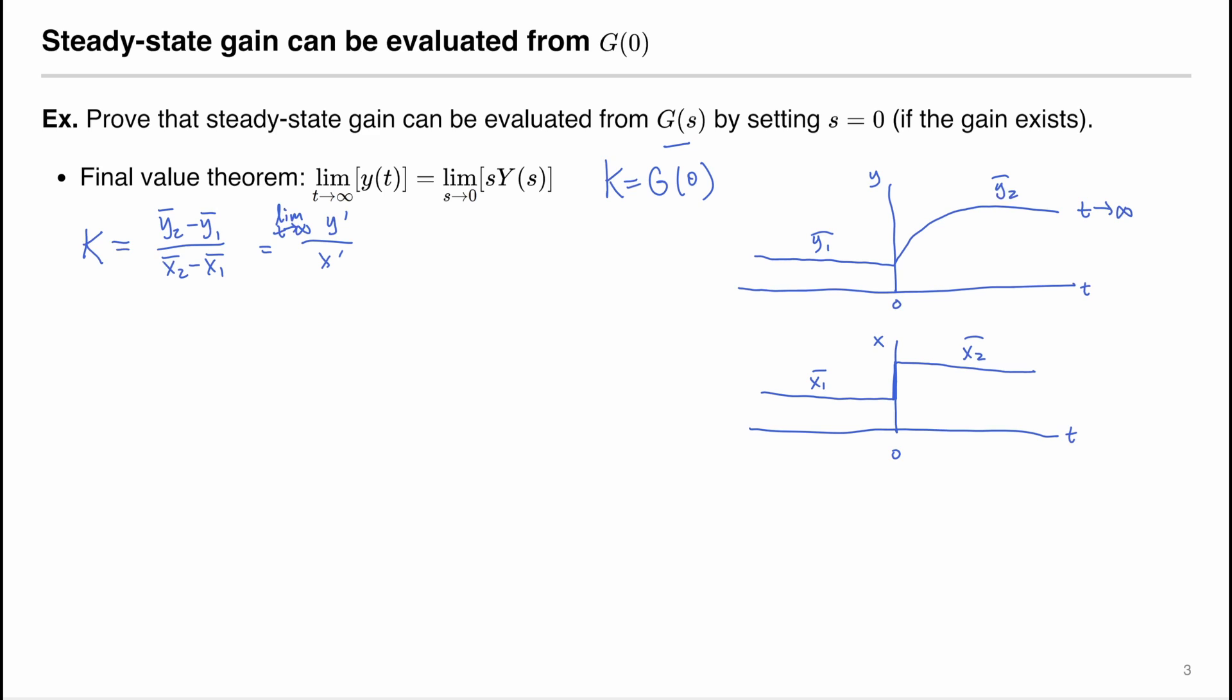And if we use the final value theorem, as t goes to infinity, it's equal to the limit as s goes to 0 of s multiplied by Laplace. Now we want to determine big Y prime of s. To do that, we can invoke the definition of the transfer function. Gain is defined as the output divided by the input in the Laplace space. And here we want deviation variable. So that we have Y'(s) equals to G(s) X'(s).